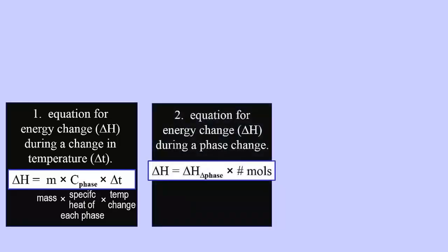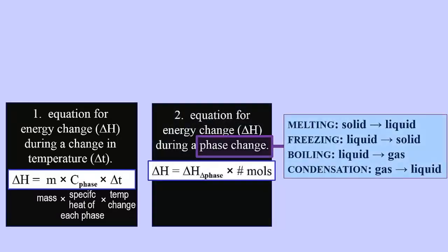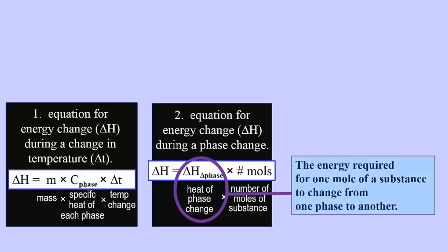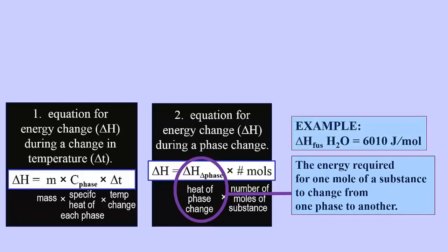The second equation gives the energy change occurring during a phase change: melting, freezing, boiling, or condensation. The equation is the heat of phase change times the number of moles. The heat of phase change refers to the energy required for one mole of a substance to change from one phase to another. For example, it takes 6,010 joules to melt one mole of ice. This energy of melting is referred to as heat of fusion.